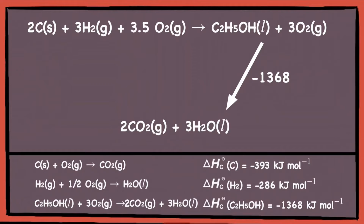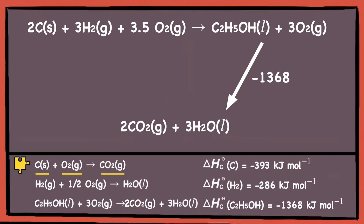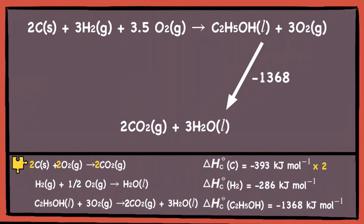Let's now fit the remaining two equations. You can choose any one — it doesn't really matter. Let's go with the first equation. We need to identify the substance of interest, which is carbon. The equation states that one mole of carbon reacts with one mole of oxygen to form one mole of carbon dioxide. But looking at the main equation, there are two moles of carbon. So we need to multiply two to each term in the first equation so that the numbers tally, and don't forget the enthalpy change will also be doubled. Now we can fit the first equation into the energy cycle.